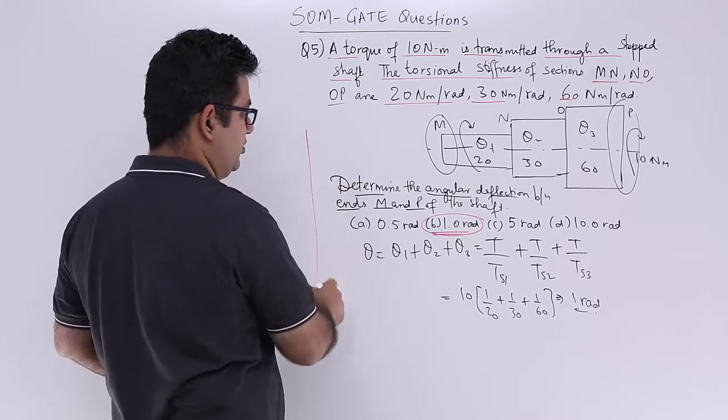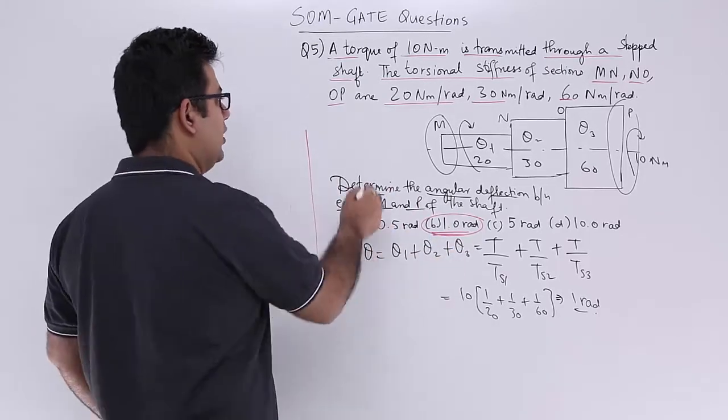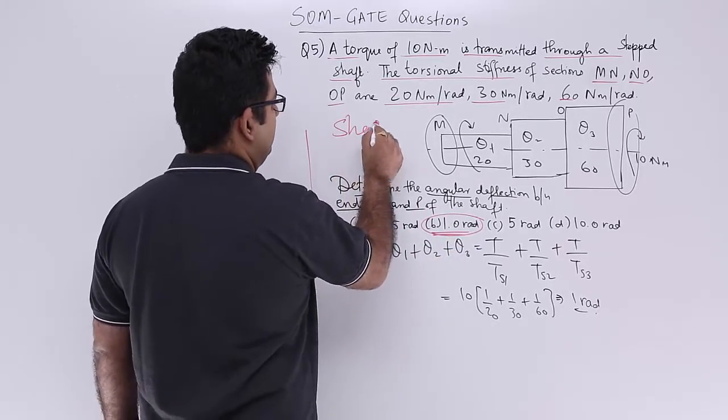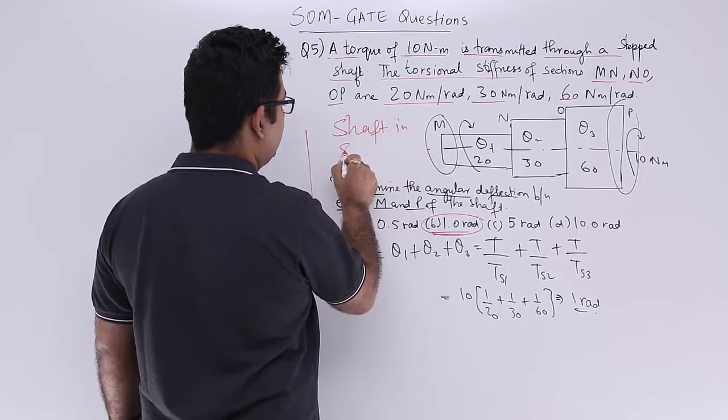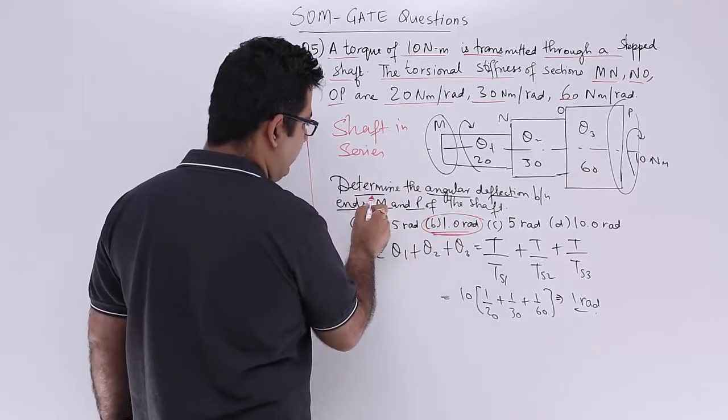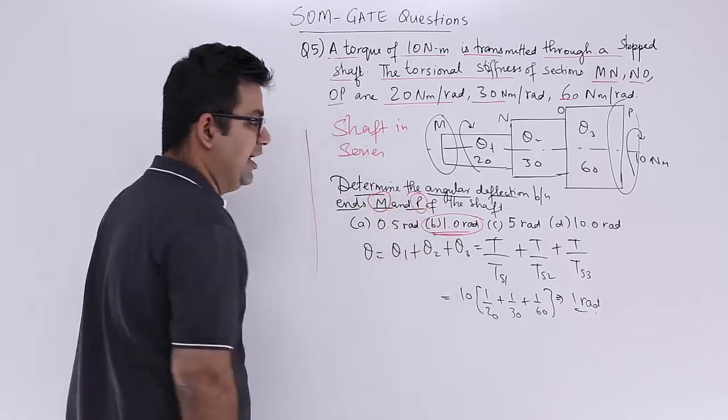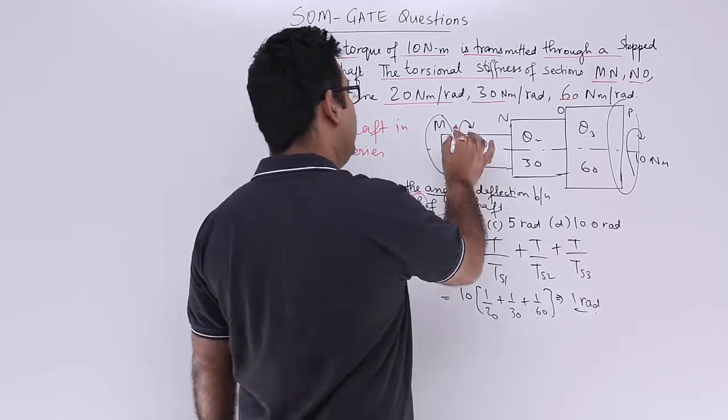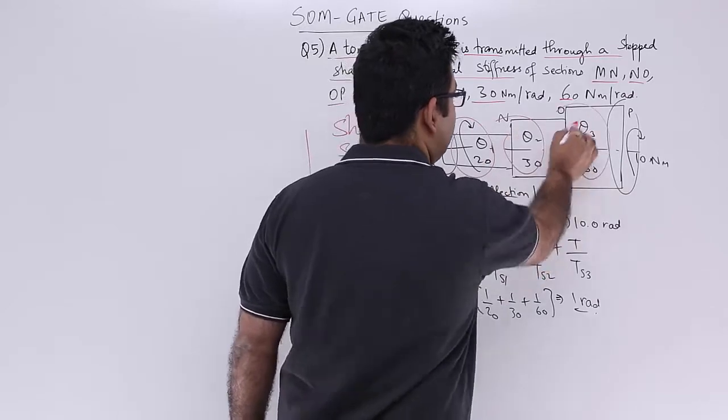So I hope you understood this question. A very simple question. Just look at that this is a shaft in series and you are required to find out the deflection between point M and P. So this means you need to find out the sum of these three deflections.